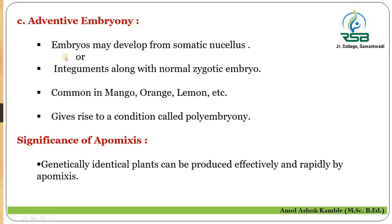In adventive embryony, embryos may develop from somatic cells of the nucellus or integuments along with the normal zygotic embryo. Examples include mango, orange, and lemon, where adventive embryony gives rise to polyembryony. The significance of apomixis is that genetically identical plants can be produced effectively and rapidly.